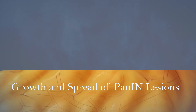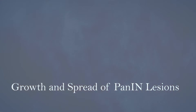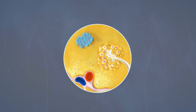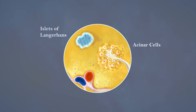Growth and spread of PanIN lesions in three-dimensional space. The pancreas is an organ located deep within the abdomen. It is composed of acinar cells, islets of Langerhans, and ducts.